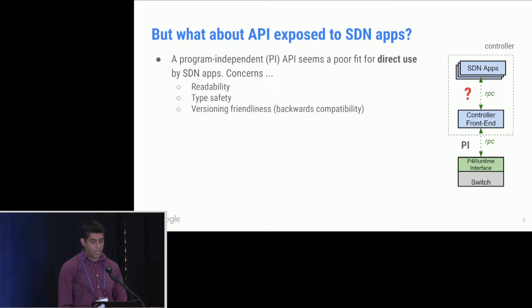So this is all good. But what about the API that we would like to expose to SDN apps? So I'm showing a world here where you've got the switch at the bottom, the controller front end in the middle, and then the SDN apps on the top. Together, the SDN apps and the controller front end is usually what we refer to as the SDN controller. We've discussed that having API between the front end and the switch is nice, has nice properties, but what about the API that we want to expose to the SDN apps? We've realized that the PI API is probably not the best fit for direct use by SDN apps. There are some concerns around readability, type safety, and versioning.